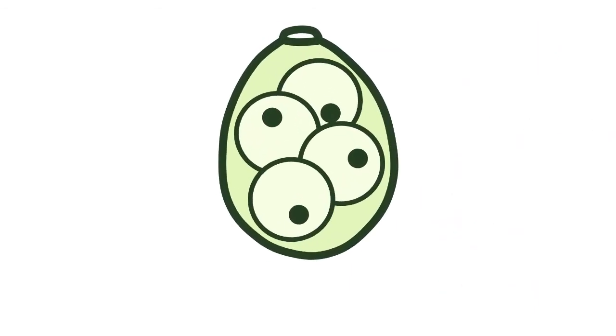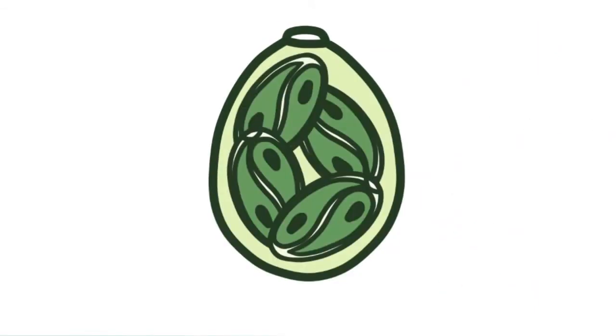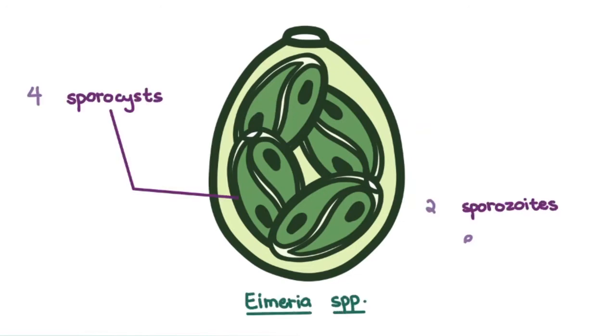Sporocysts and sporozoites form during sporulation. Eimeria species have four sporocysts with two sporozoites each.